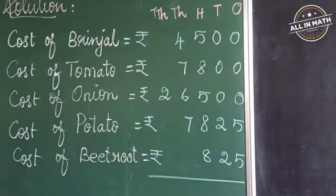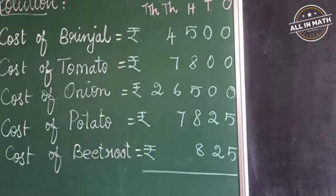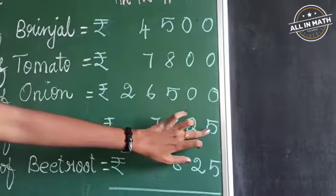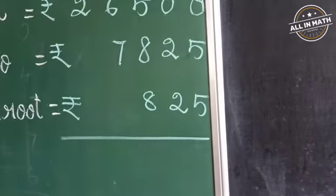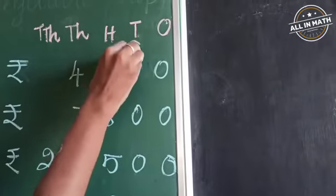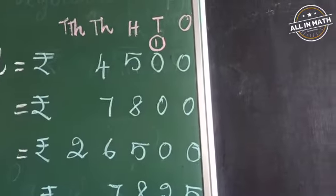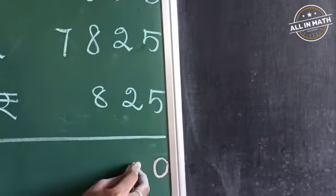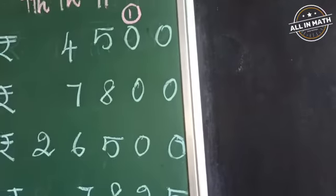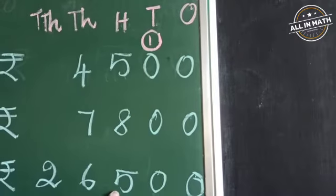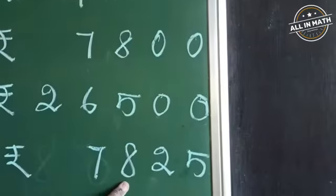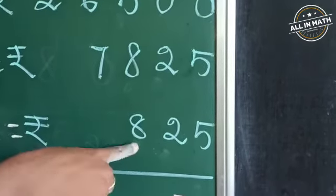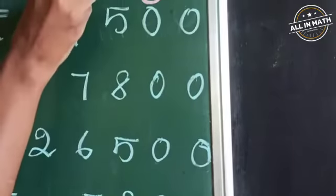Always write the place values at the top — it will be easy for you. Now we are going to add the numbers in the one's place: 0, 0, 0, 5, 5. All the zeros plus 5 gives 5. 5 plus 5 is 10 — a two-digit number. So put 0 in the one's place and take 1 as a carry over in the tens place. Now add the numbers in the tens place. 1 plus 0, 0, 0 gives 1. 1 plus 2 is 3. 3 plus 2 is 5. In the hundreds place: 5 plus 8 is 13. 13 plus 5 is 18. 18 plus 8 is 26. 26 plus 8 is 34. So put 4 in the hundreds place and take 3 as a carry over in the thousands place.